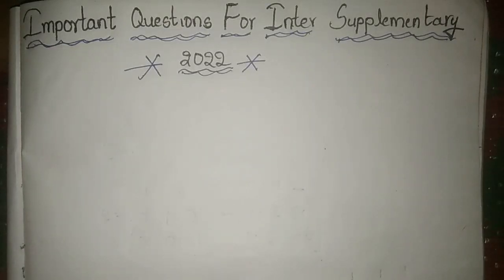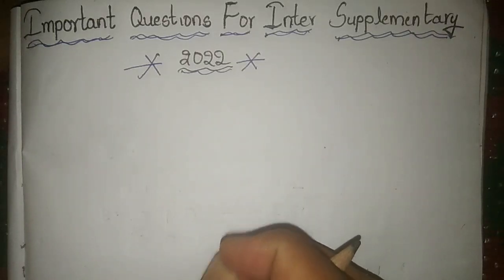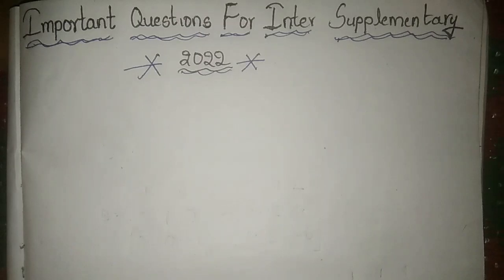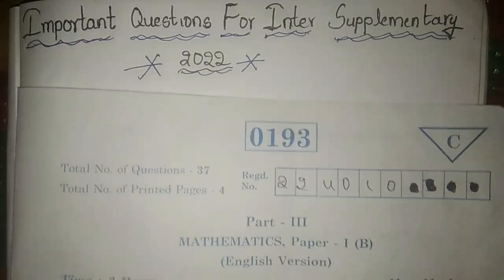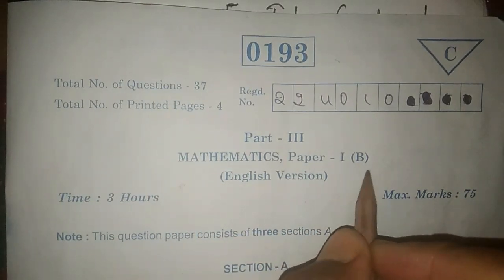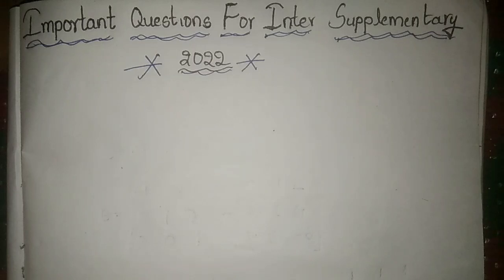Hello friends, today in this video I will tell you Mass B important questions for inter-supplementary students in 2022. This is our Mass B question paper — board exam, Mathematics Paper 1B, English version. Time given is 3 hours and total marks is 75. Let's start our today's video about 4 marks important questions.